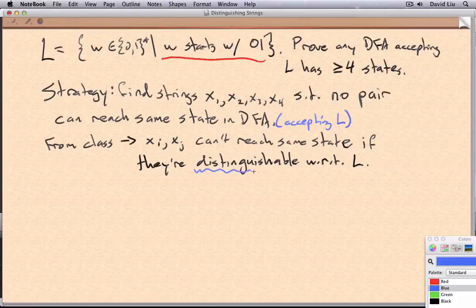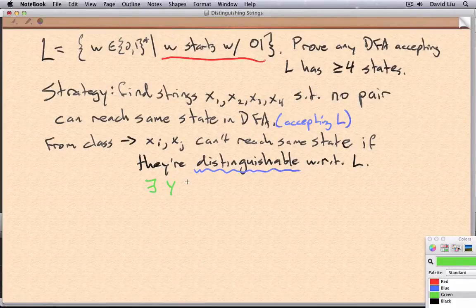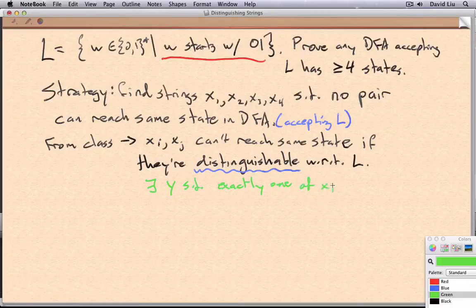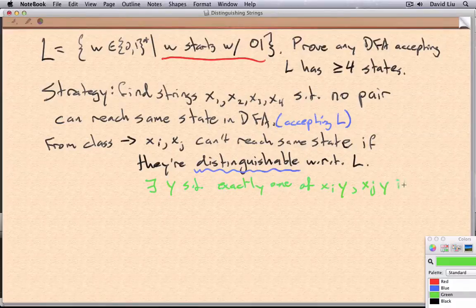Now let me remind you what I mean by distinguishable. For example, there exists a string Y such that exactly one of XIY and XJY is in L.